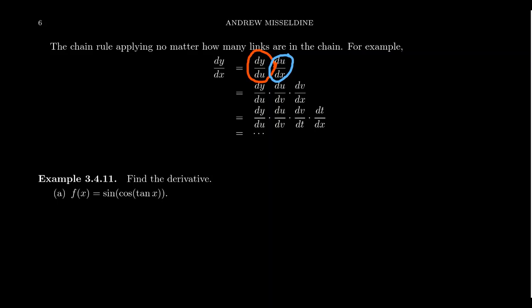But suppose that u itself has an inner function. We can take the derivative of y with respect to u, the derivative of u with respect to v, and the derivative of v with respect to x. And what if v itself has an inner function? We could take the derivative of y with respect to u, u with respect to v, v with respect to t, t with respect to x — and we can keep going and going. As we link these different functions inside of each other, we start to see why we call it the chain rule.